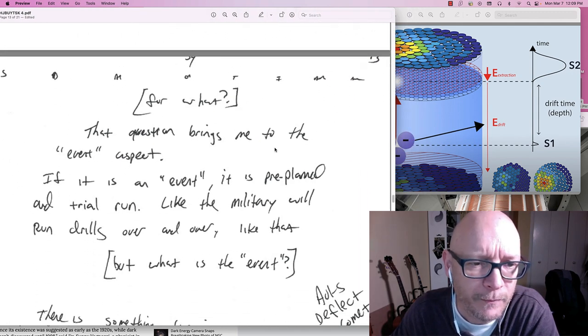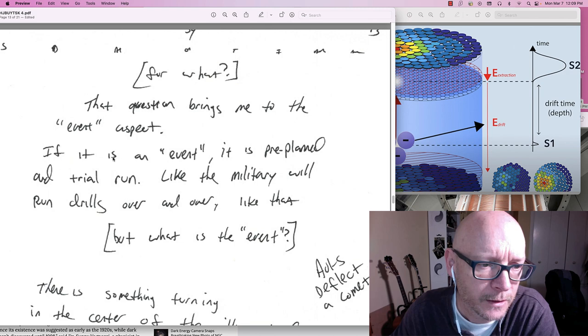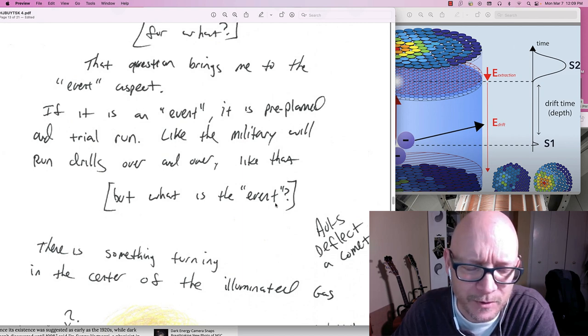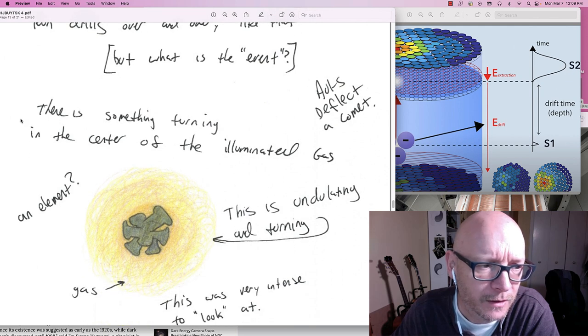There. What for. That question. Brings me to the event. Aspect. If it is an event. It is pre-planned. And trial run. Like the military. Will run drills. Over and over. Like that. But what is the event though. I wonder. There is something. Turning. In the center. Of the illuminated gas. An element. This is undulating. And turning. This is the gas here.